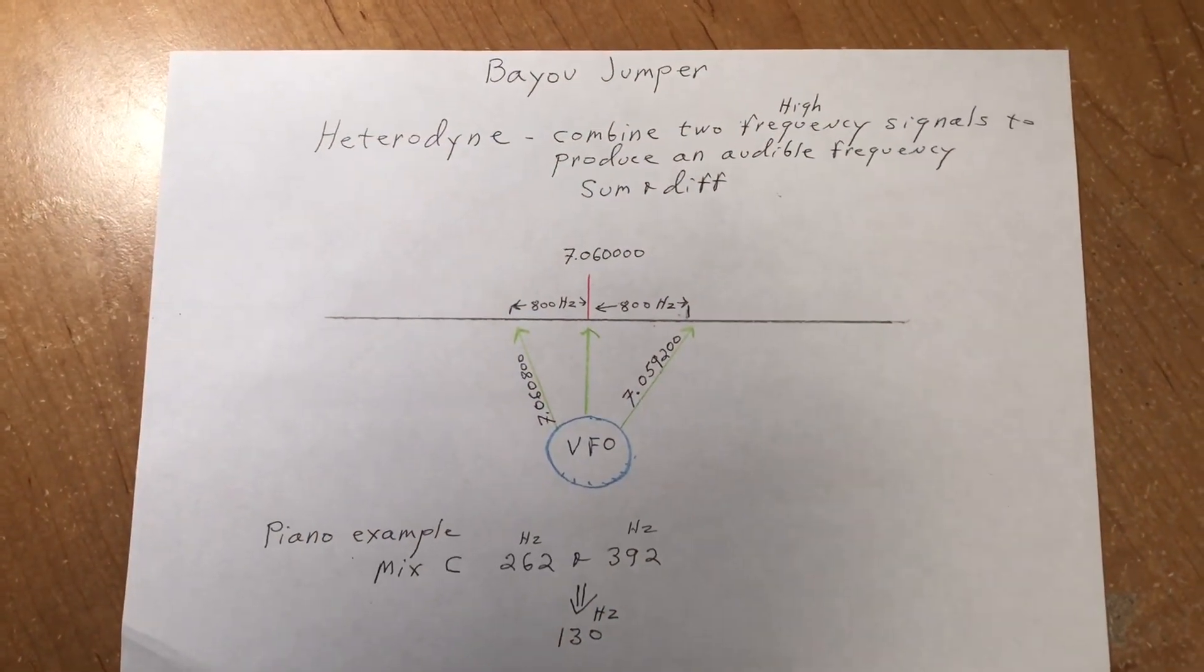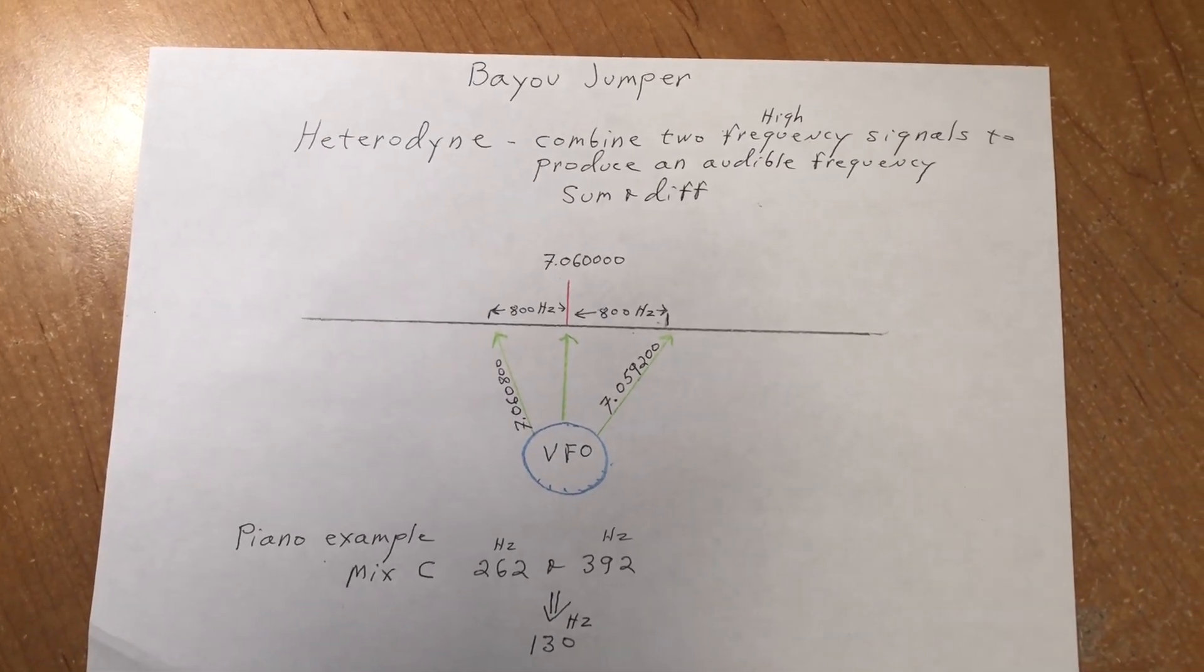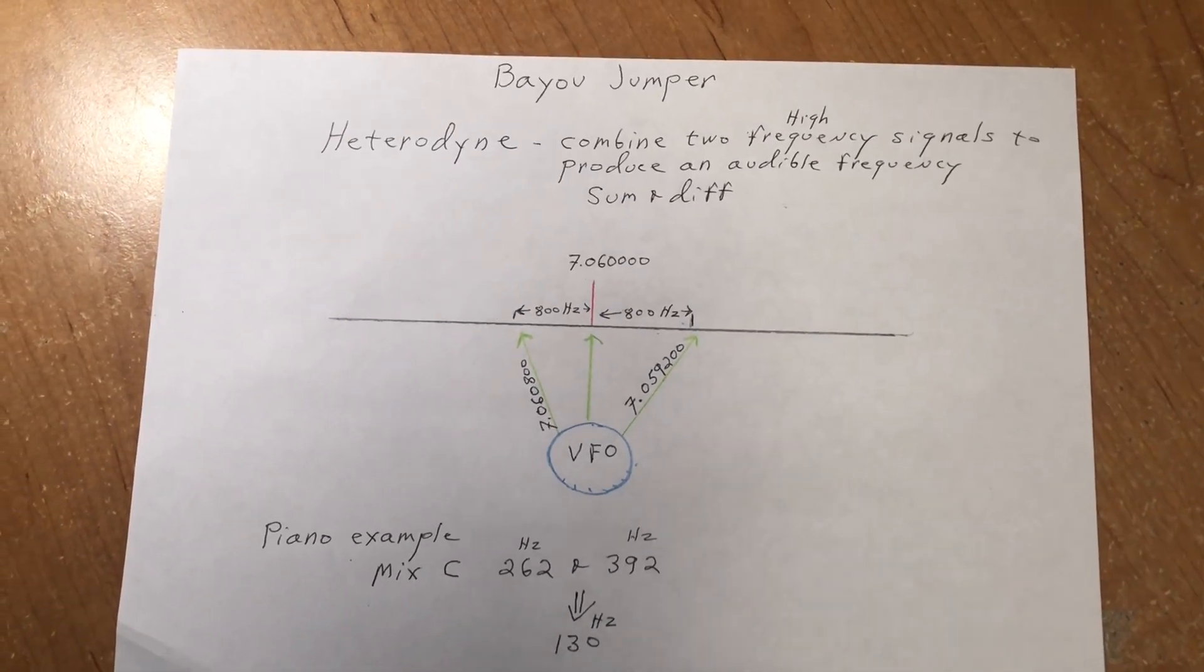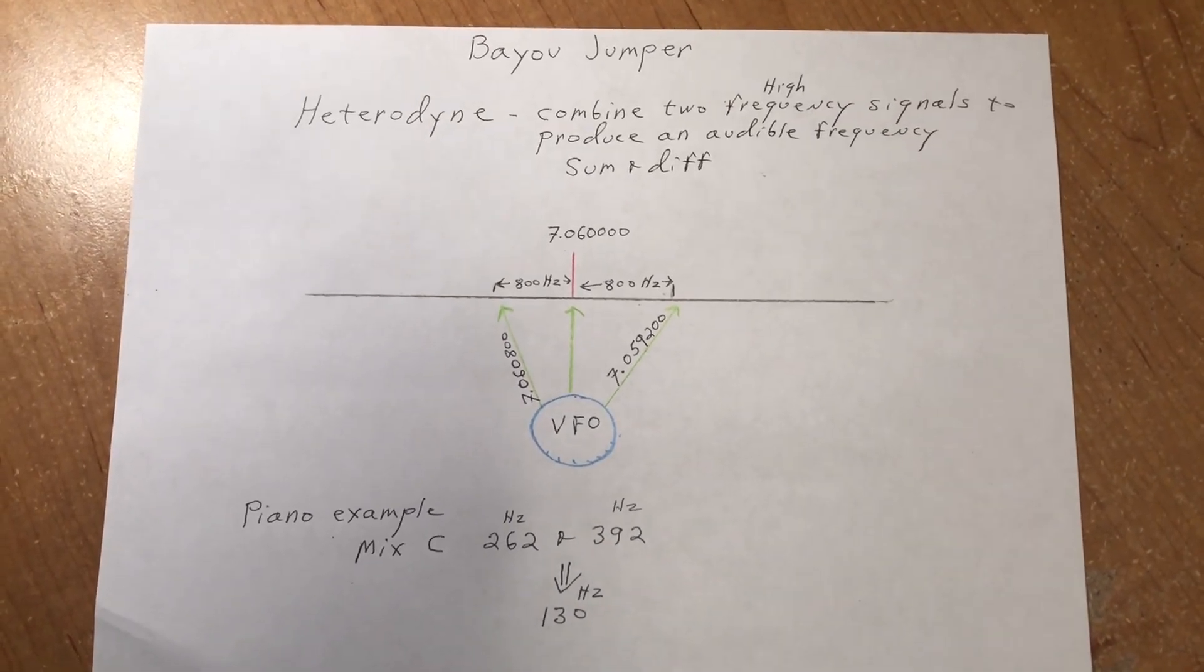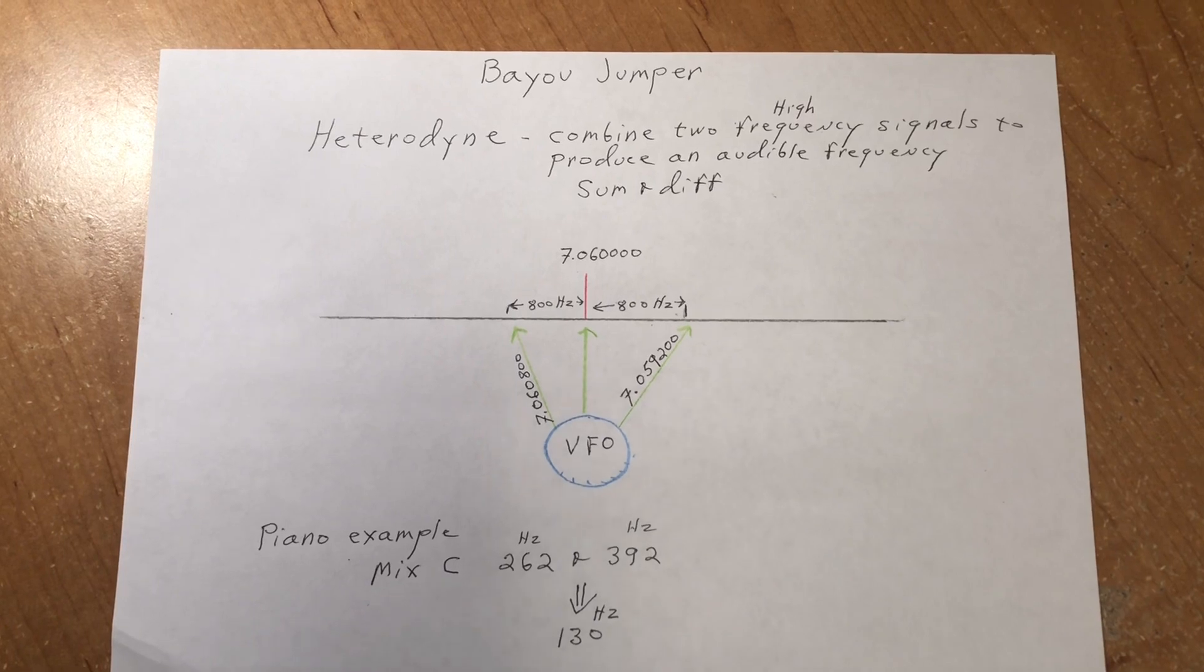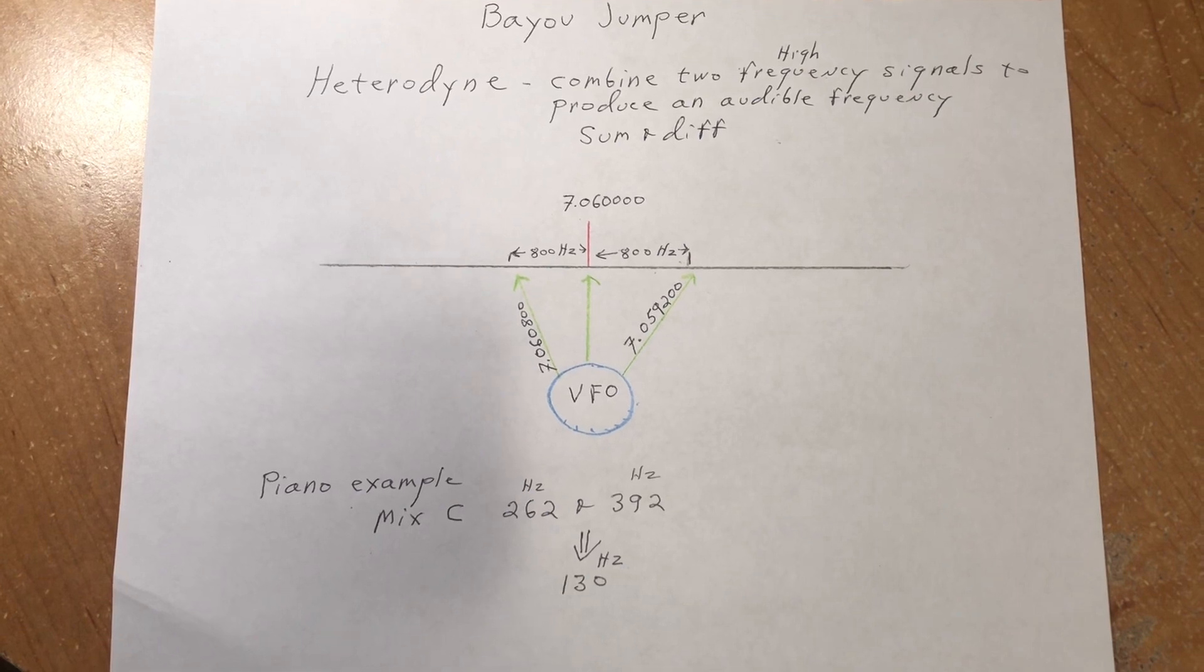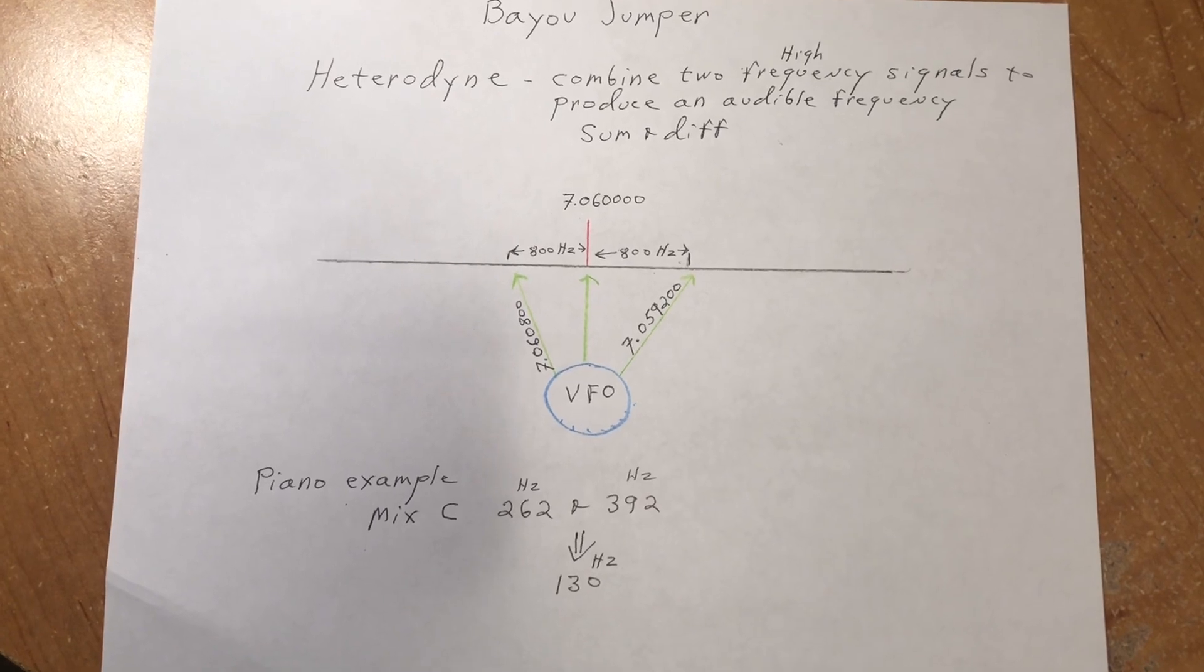Before we go on to looking at the Bayou Jumper, I think it's important to understand how the radio allows us to hear frequencies of seven megahertz. Now my background is not electronics, it's medical, so anything I say here perhaps should not be taken as gospel, but this is how I learned it and I think if you understand this it makes operating the Bayou Jumper a little easier. So the principle is called heterodyning. That's when you combine two frequencies and out of those two frequencies comes the sum and the difference of those frequencies.